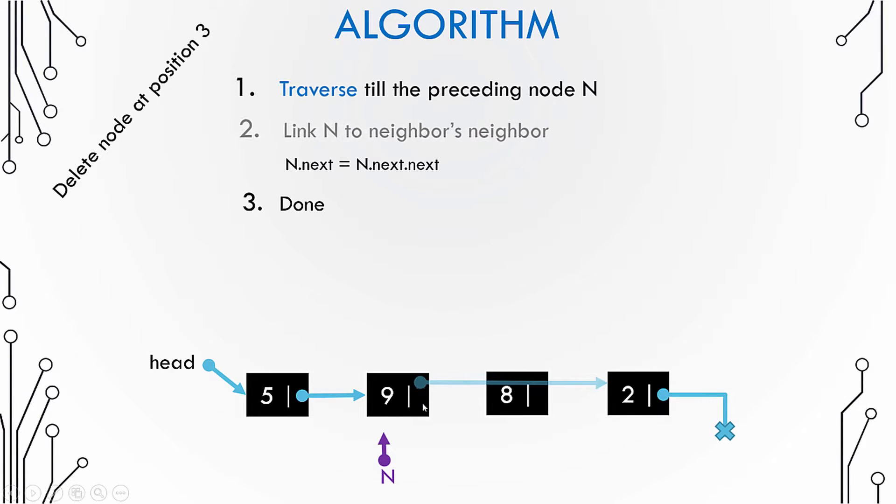So what we do is we skip that node to be deleted and then point the next pointer of the preceding node to the neighbor of the node that has been deleted. This can be done with this statement.